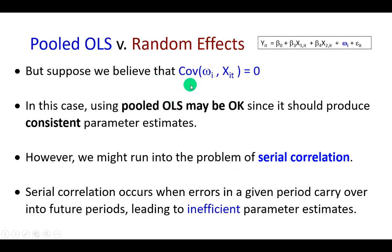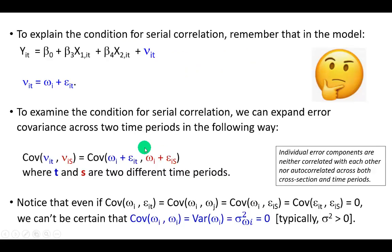But suppose we believe that covariance between the firm error term and the regressor is zero. In this case, using pooled OLS may be okay. However, we might run into the problem of serial correlation, which occurs when errors in a given time period carry over into subsequent periods. To see how this works, consider again this panel data model.